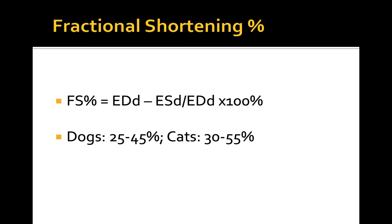There are several limitations of fractional shortening measurement. First, panting dogs often have excessive motion of the cardiac structures, which can lead to incorrect impressions of depressed systolic function. Also, both LV and RV are contracting not only in the short axis but also in the long axis plane. Therefore, single-plane assessment of fractional shortening may underestimate LV function.